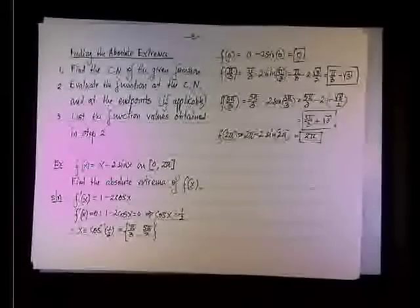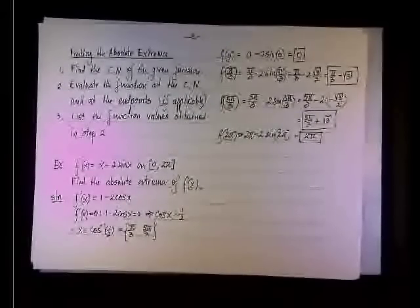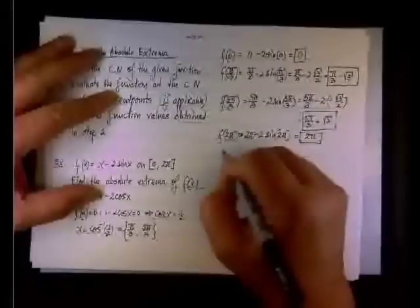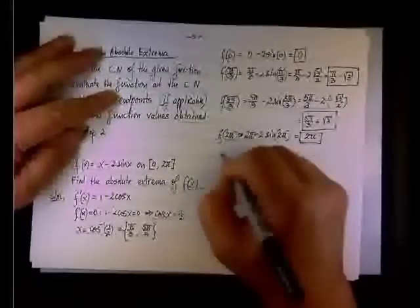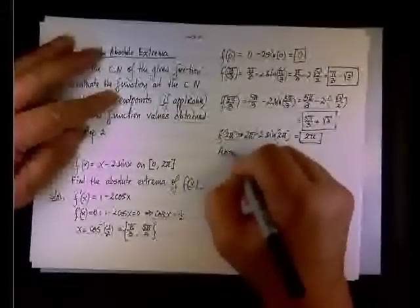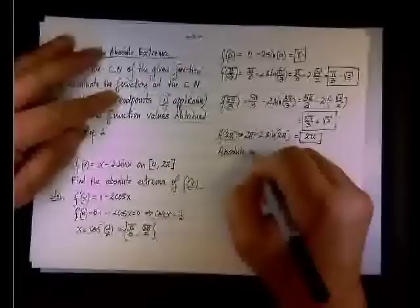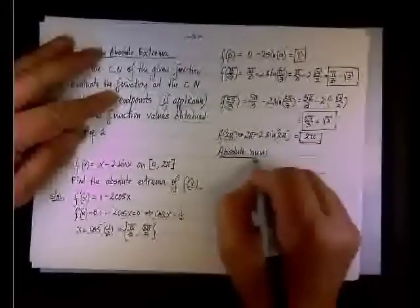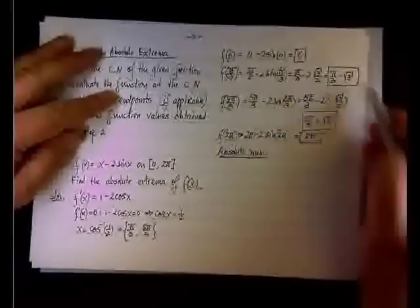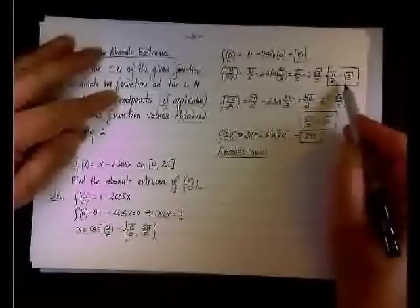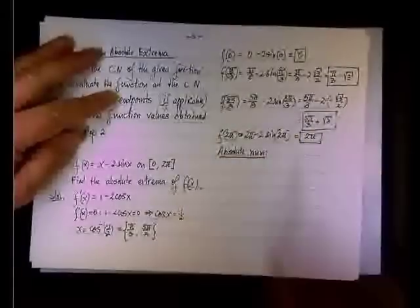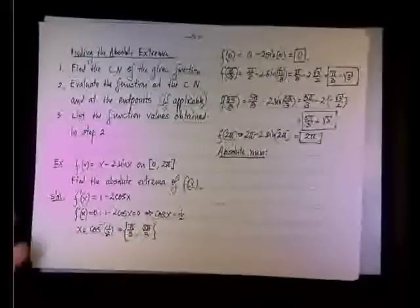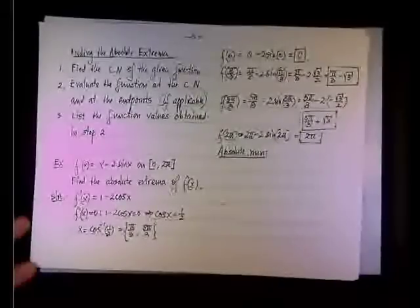So we have four values, and we need to decide which one will give us the absolute minimum and which one will give us the absolute maximum. So what is the lowest value? Is it zero, pi over three minus the square root of three, five pi over three plus the square root of three, or two pi? What say you?